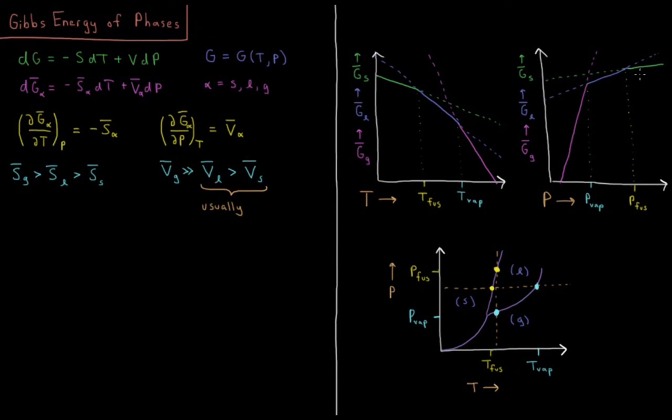So what typically happens in phase diagrams is that at high pressures we have solids, at low pressures we have gases, and at intermediate pressures we have liquids for a given temperature. Notice once again that if my temperature was below the triple point temperature, then I would have gone straight from gas to solid.